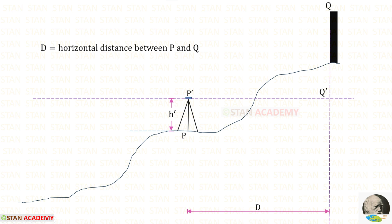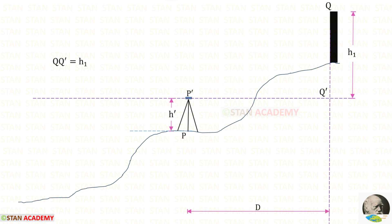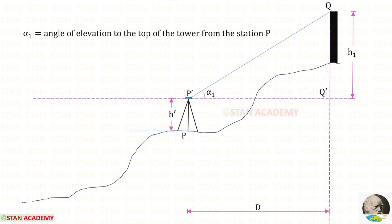Let us keep the horizontal distance between P and Q as D, and let us keep the height of QQ dash as H1. From the theodolite at station P we have to focus the top of the tower and take the reading of the vertical angle. Let us keep the vertical angle as alpha 1.